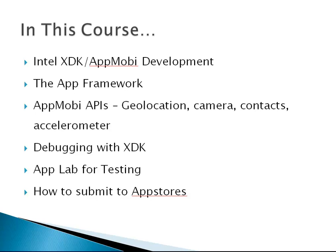We'll then move on to Intel XDK, which is also known as AppMobi. Intel XDK is a tool that we can use to write HTML5 applications that will run in a native container on any platform. We'll learn about the app framework, which is a mobile framework similar to jQuery mobile. We'll also work with some of the APIs that we used in the PhoneGap section: geolocation, camera, contacts, and accelerometer.